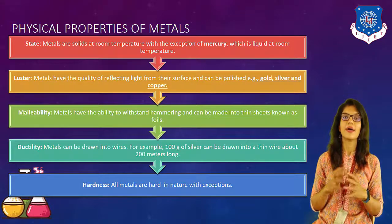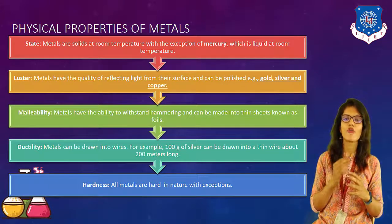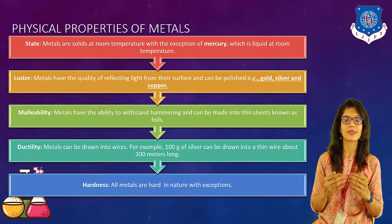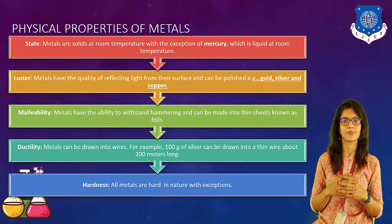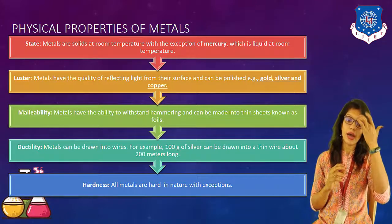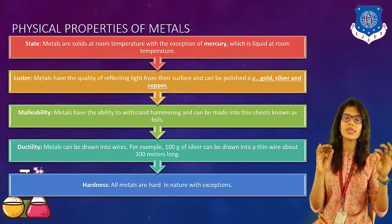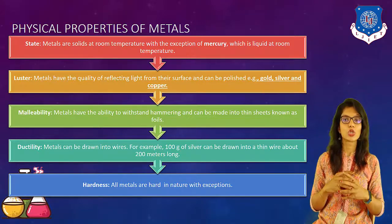The next property is malleability. Metals have the ability to withstand hammering and can be made into thin sheets, which are known as foils. This property of converting itself into foils is known as malleability. Next is ductility — metals can be drawn into wires. For example, 100 grams of silver can be drawn into a thin wire about 200 meters long. This ability to convert into a thin wire is known as ductility.